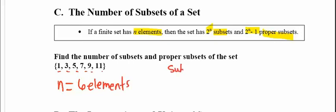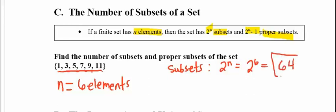To find the number of subsets, which do include the original set and all sets smaller than that, would be 2 to the nth or 2 to the 6th power, which equals 64 subsets.